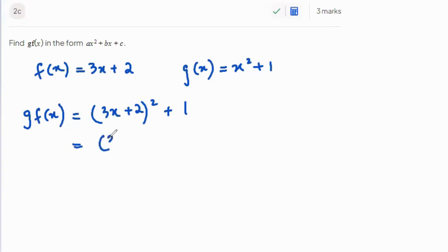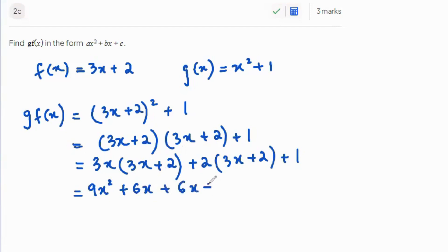Let's expand the bracket. 3x plus 2 times 3x plus 2 plus 1. That's 3x times 3x plus 2, plus 2 times 3x plus 2. That's 9x squared plus 6x plus 6x plus 4 plus 1, which equals 9x squared plus 12x plus 5. That is your answer in the quadratic form.